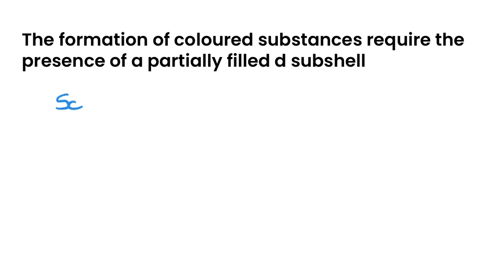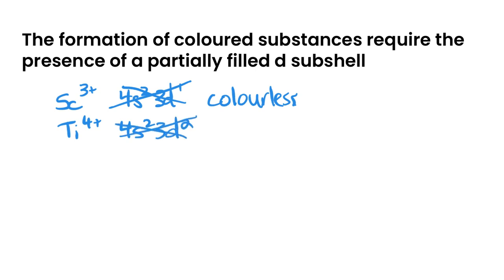So a couple of examples here. If we have a scandium 3+, remember scandium by itself is 4s2 3d1. So it would have none of those electrons, which means that it has no electrons in the 3d subshell. So it is colorless. The same happens for titanium 4+, which is normally 4s2 3d2. So taking four electrons away, again, you have no electrons left in that d subshell, which means that it's colorless.